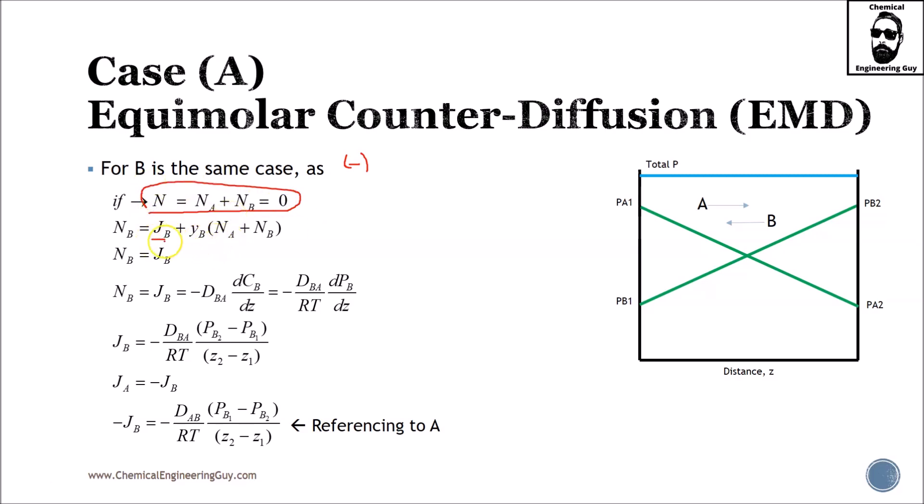JB will be now describing NB. So you need to further continue, you will get the same values. But more importantly, if you wanted to reference versus A, you know that that negative sign is always present. So either you change the pressures, or you change the z values.